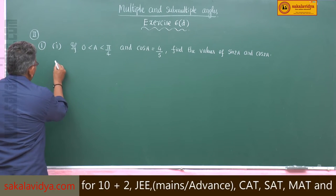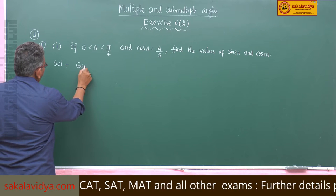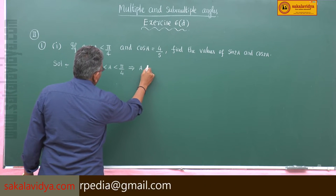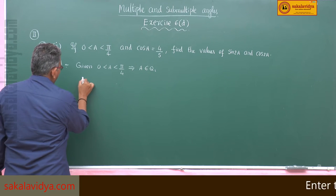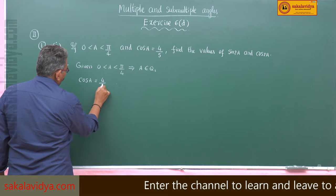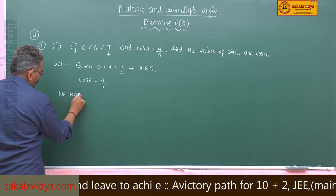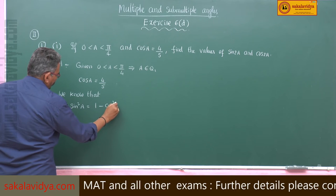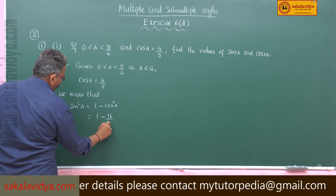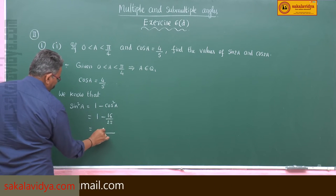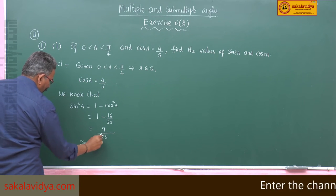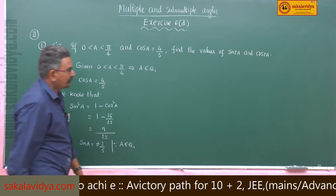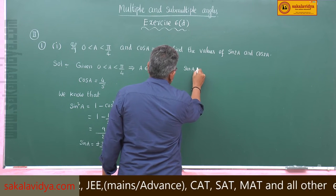Given 0 < A < π/4, that implies A belongs to the first quadrant. cosA = 4/5. We know sin²A = 1 − cos²A = 1 − 16/25 = 9/25. So sinA = ±3/5. Since A is in the first quadrant, sinA is positive, so sinA = 3/5.